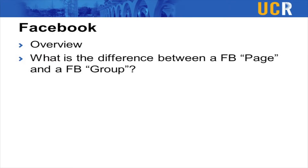A group can be closed — you have to join it, so it's meant for planning or discussing group business. It's not really meant to be outward-facing or for marketing. A page, on the other hand, is something people like rather than join, and they'll be updated with statuses and can RSVP to events. As an organization, you probably want to create a page. If you currently have a group, I would consider starting a page instead.